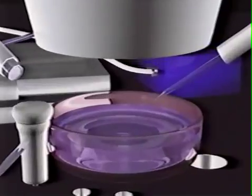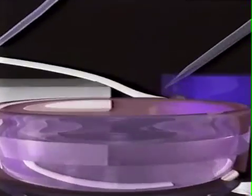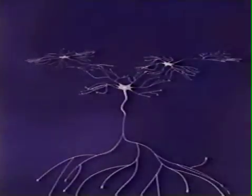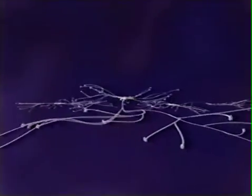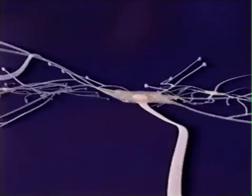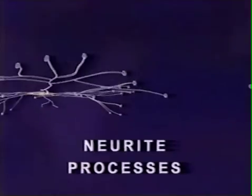To better understand mercury's effect on the brain, let us first illustrate what brain neurons look like and how they grow. In this animation, we see three brain neurons growing in a tissue culture, each with a central cell body and numerous neurite processes.